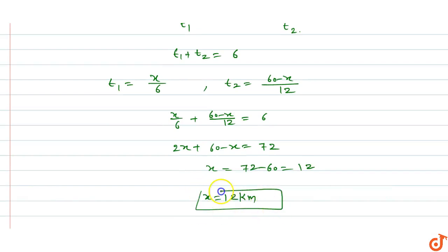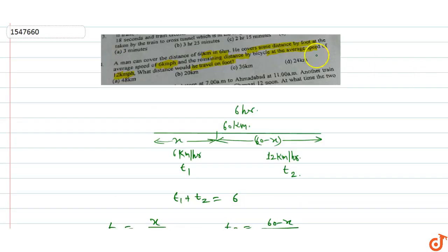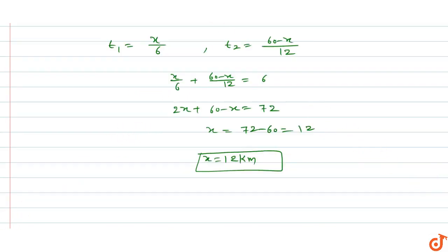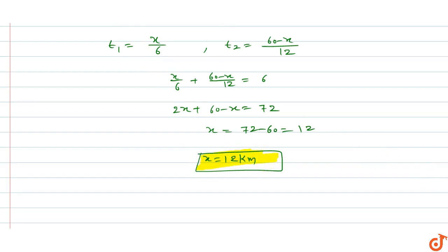12 kilometers is the distance. The question asks what would be the distance traveled on foot, so 12 kilometers travel by foot and remaining distance by bicycle. So the distance traveled by foot is equal to 12 kilometers.